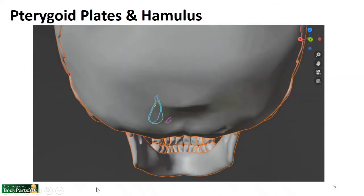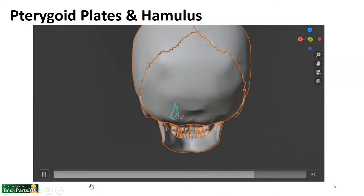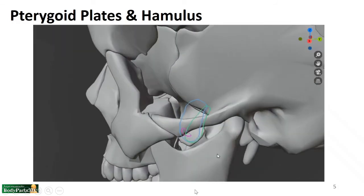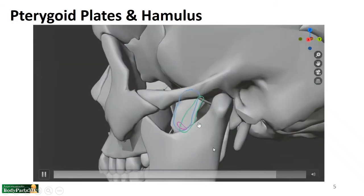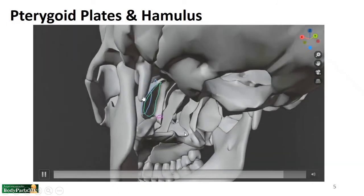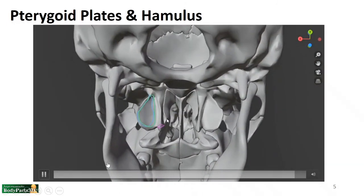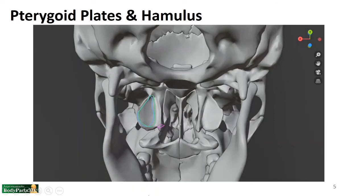In context with the rest of the skull, we can see where these structures sit in relation to the infratemporal fossa. Remember, the lateral plate is the medial boundary of the infratemporal fossa. The region of the nasal cavity and pharynx is back here, where this would continue down.